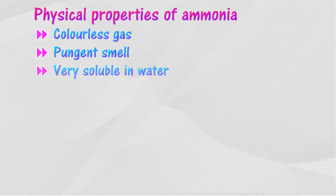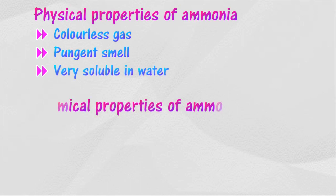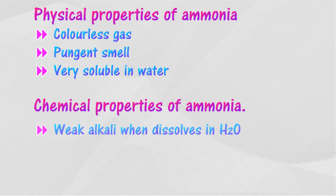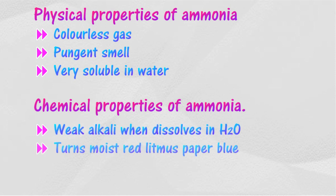Ammonia is one of the most important industrial chemicals. Ammonia is a colorless and pungent gas. It is highly soluble in water. Ammonia has characteristics of a weak alkali; when dissolved in water, it turns moist red litmus paper blue.